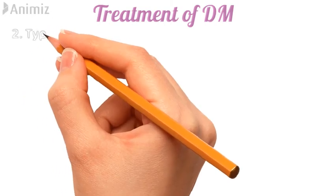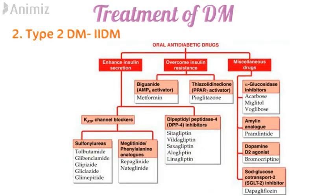For Type 2 diabetes mellitus, all agents can be taken orally and are divided into three main classes. The first class enhances insulin secretion, which includes sulfonylureas, meglitinides, and dipeptidyl peptidase-4 (DPP-4) inhibitors. The second class overcomes insulin resistance, including biguanides and thiazolidinediones. The third category is miscellaneous, which includes alpha-glucosidase inhibitors, amylin analogues, dopamine D2 agonists, and SGLT2 inhibitors.